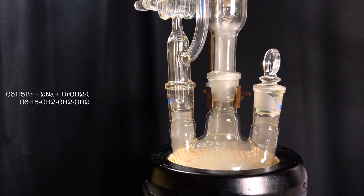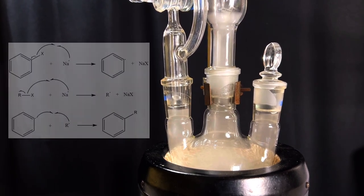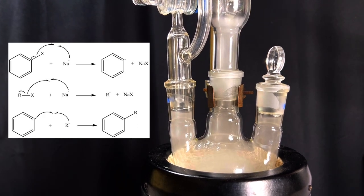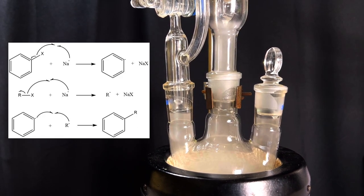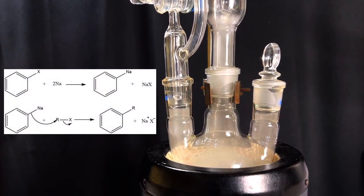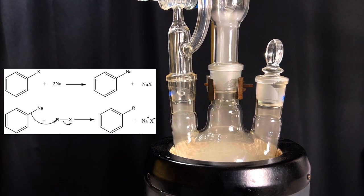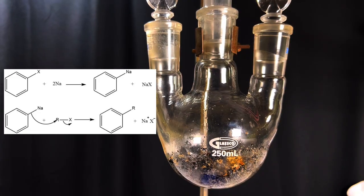Two mechanisms have been proposed for both Wurtz reaction and Wurtz-Fittig reaction. In the first approach there is sodium mediated formation of alkyl and aryl radicals which then combine to form the substituted hydrocarbon. In the second approach there is formation of an intermediate organosodium compound followed by nucleophilic attack of the alkyl halide.